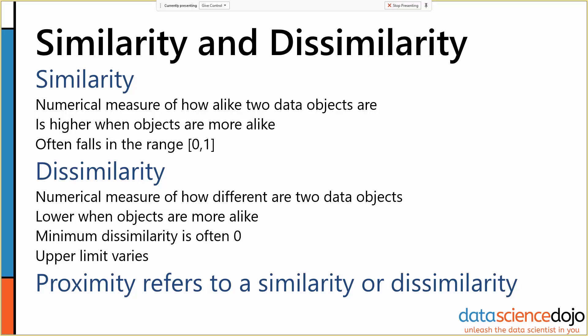Dissimilarity is a numerical measure of how different two data objects are. It's lower when objects are more alike. The minimum dissimilarity is zero almost always. The upper limit varies based on the exact metric you're using, but is often one, just sometimes higher.